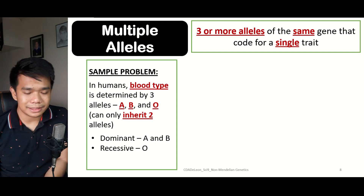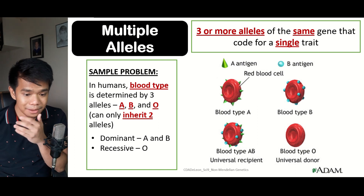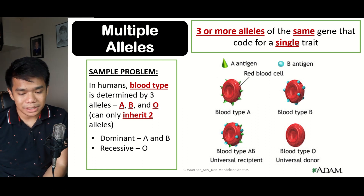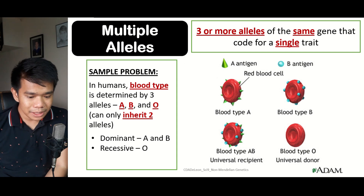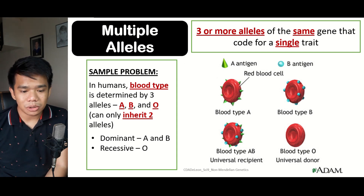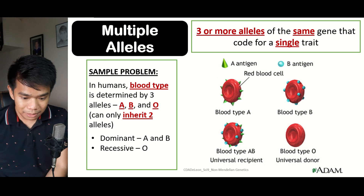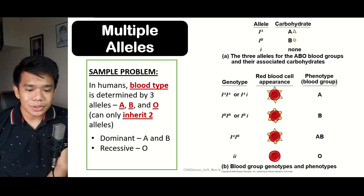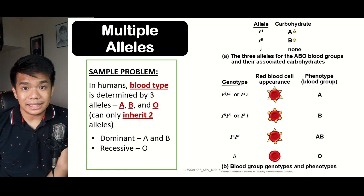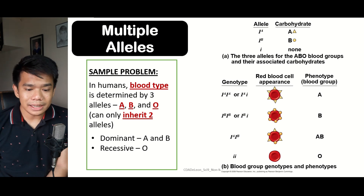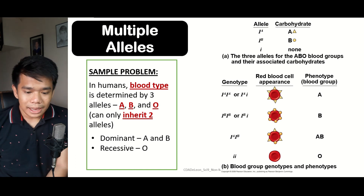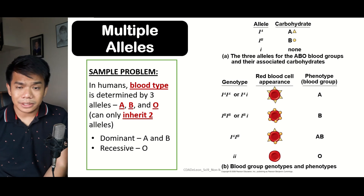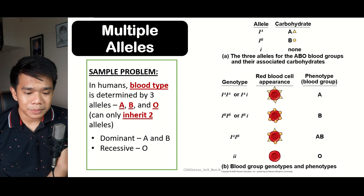The difference between blood types: blood type A contains antigen A, blood type B contains antigen B, blood type AB contains both antigens A and B, and blood type O does not contain any antigen at all. The antigen is represented by the capital letter I, indicated as either IA or IB, while the small letter i means there is no antigen — representing type O.